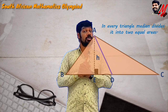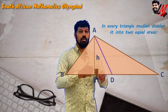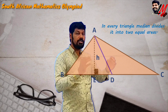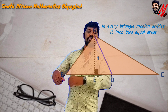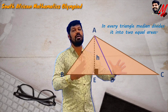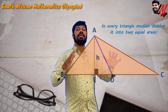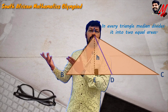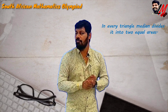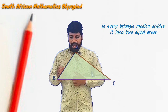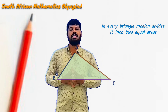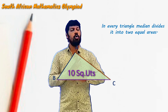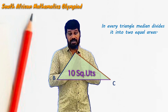We learned this in the ninth class triangle chapter. The problem I am going to discuss now is completely built on this one concept, and even the solution is completely based on this single point — that is the amazing thing behind this problem. So without wasting time, let me explain the problem and later we will go for the solution. Triangle ABC has an area of 10 square units, and apart from that, no other numerical information is given.